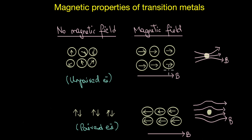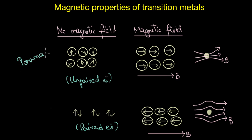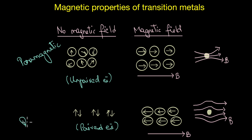Materials that get attracted to the magnetic field — the ones with unpaired electrons — are called paramagnetic materials. Those materials that get repelled by the magnetic field, or the ones that have paired electrons, are called diamagnetic materials.